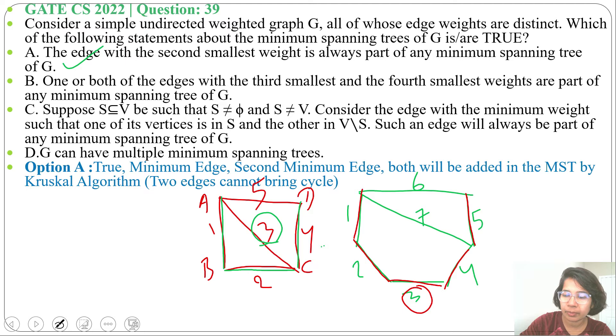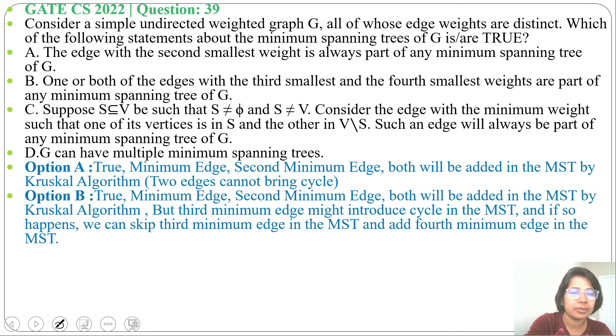Next option C: suppose S is subset of V such that S ≠ φ and S ≠ V. For vertices, S is some set. Consider the edge with the minimum weight such that one of its vertices is in S and other in V \ S. Such an edge will always be part of any minimum spanning tree of G.